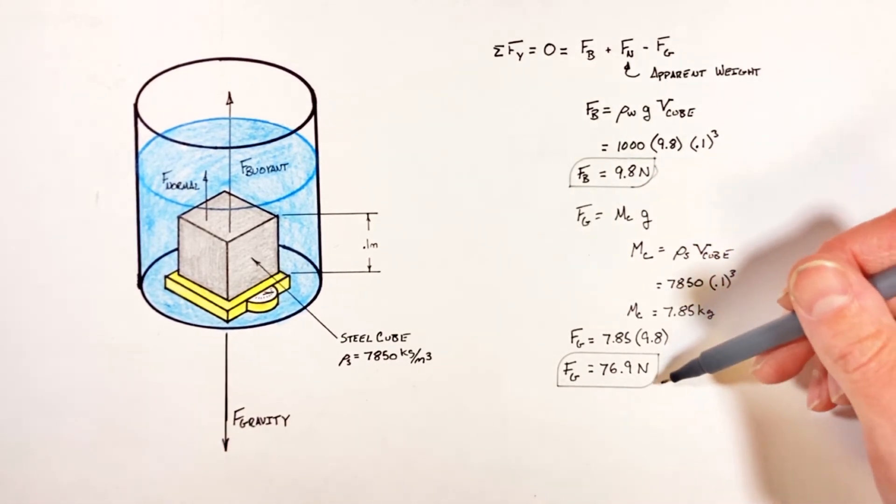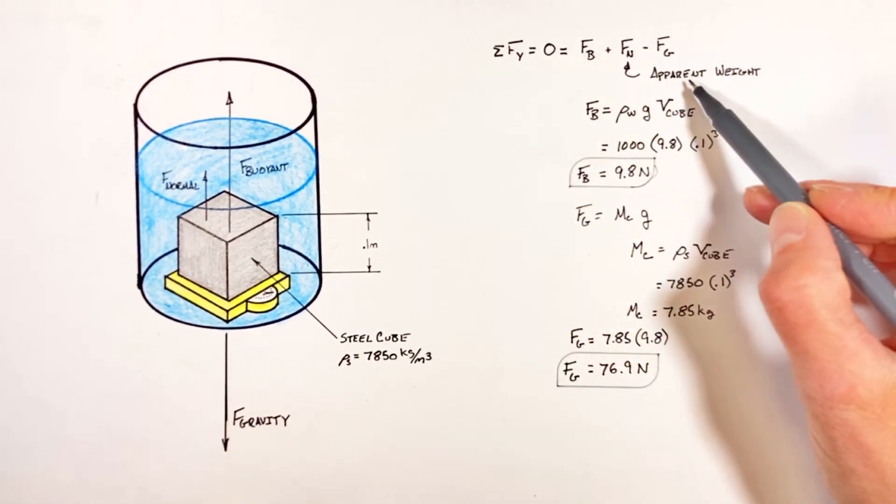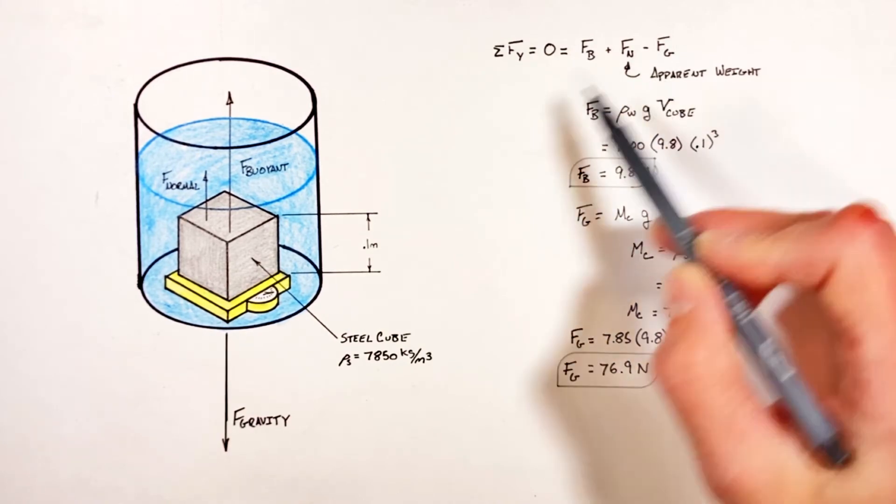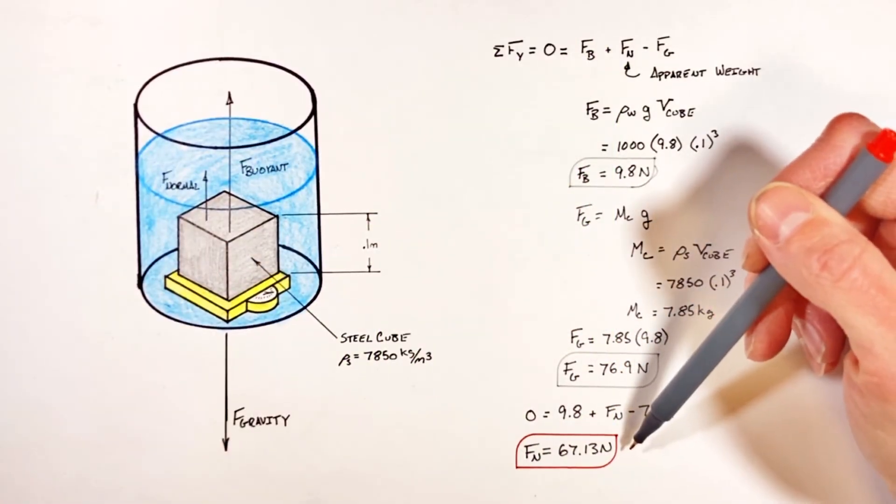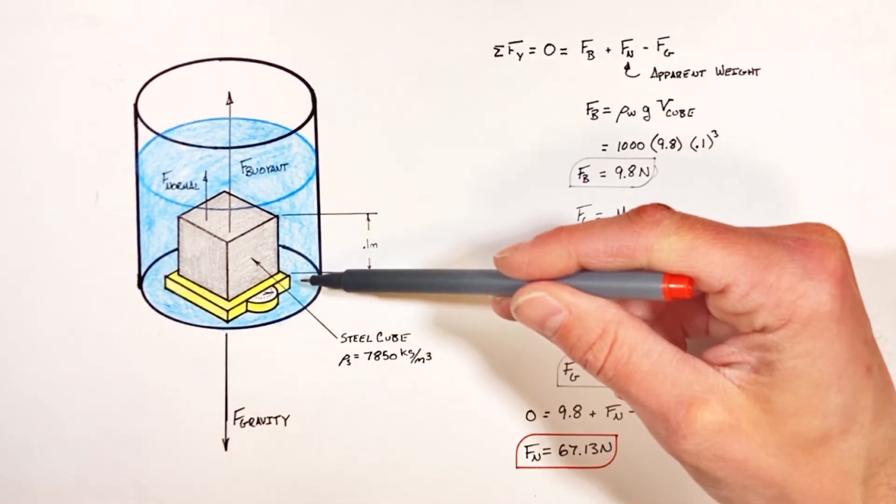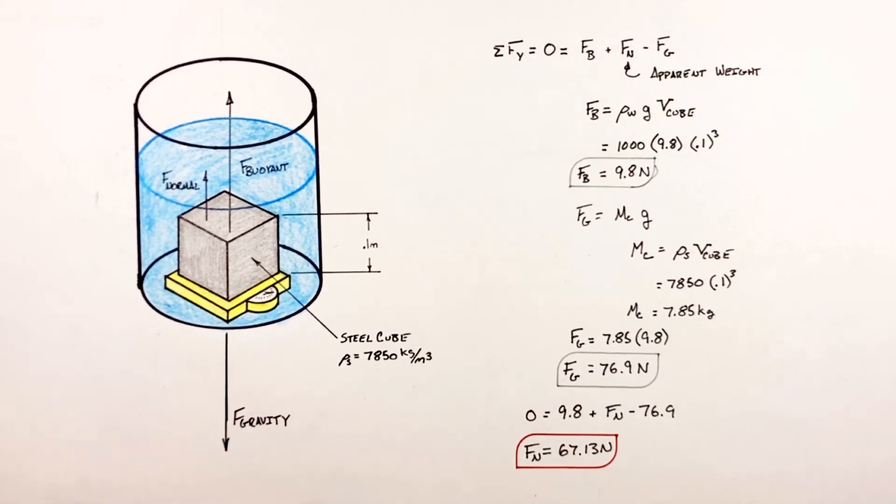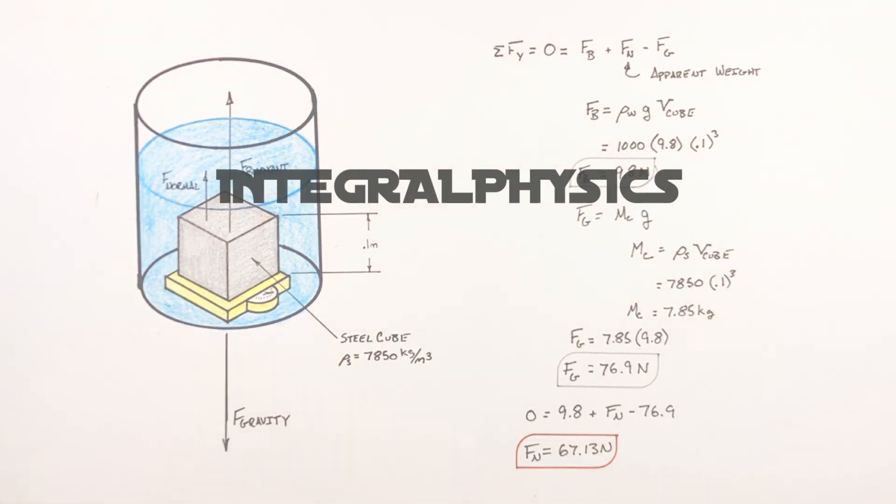So now that we know the buoyant force as well as the force by gravity, we can back up here to find the apparent weight of the block, or the reading on the scale, is 67.13 newtons. So yes, this is a bit of an absurd problem, but I hope you found this helpful, and on that note, that's all for now.